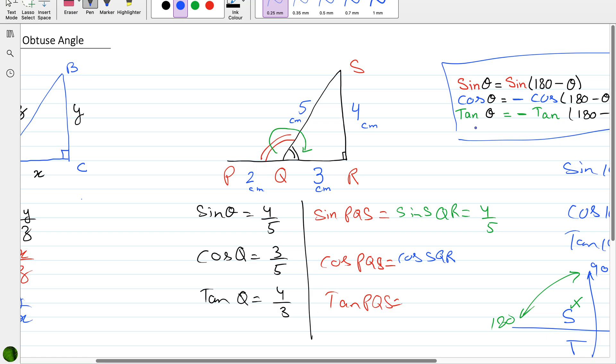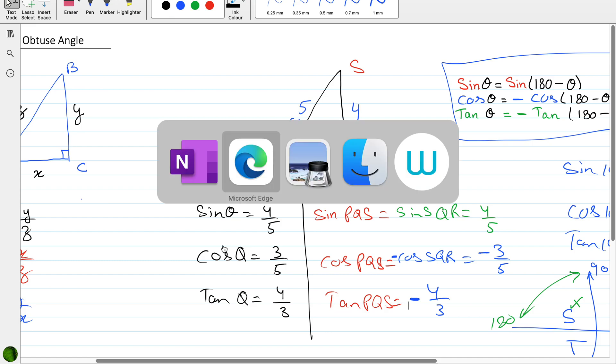For cos PQS, again the same angle as cos SQR, but due to this identity we know that obtuse cos is negative. So when you look at the right-hand side, cos is 3 by 5, but we will be writing negative 3 by 5. And doing it directly for tan, it is 4 by 3, but we will be adjusting a negative sign here. Let's go to some practice questions.